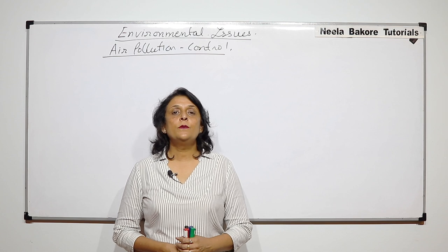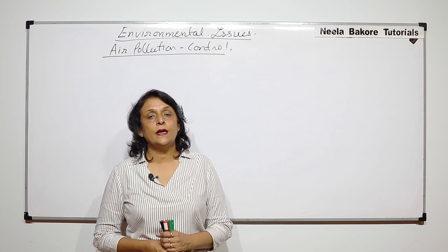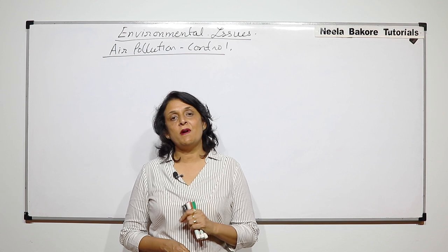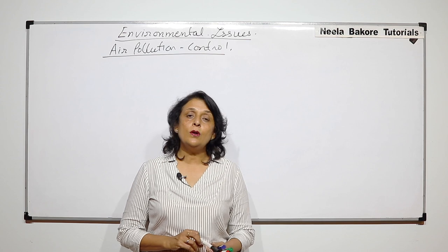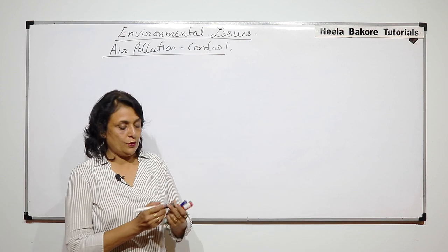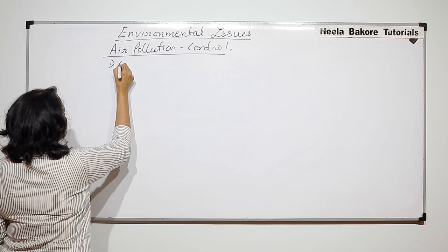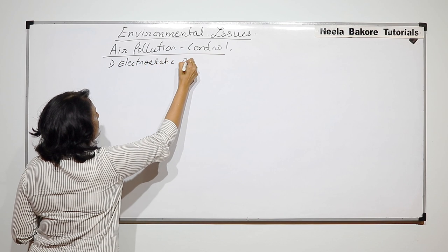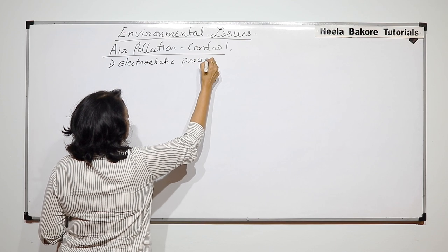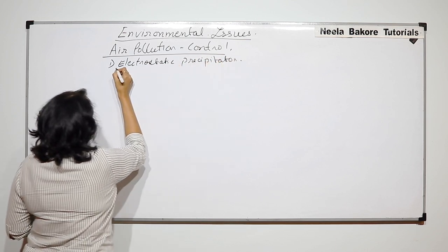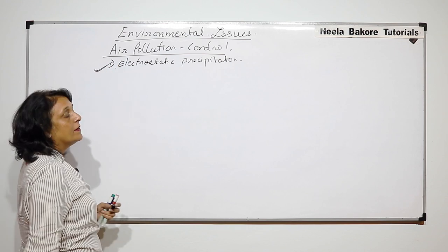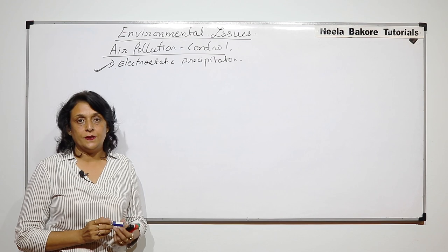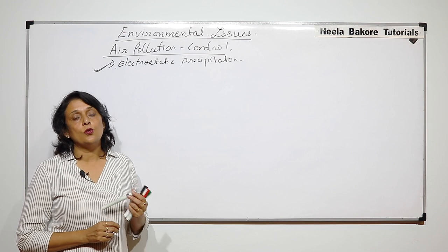In the previous part we talked about the electrostatic precipitator, the device which is used to remove suspended particulate matter. We were talking about control of air pollution, and the first method — the electrostatic precipitator — was finished in the previous lecture.